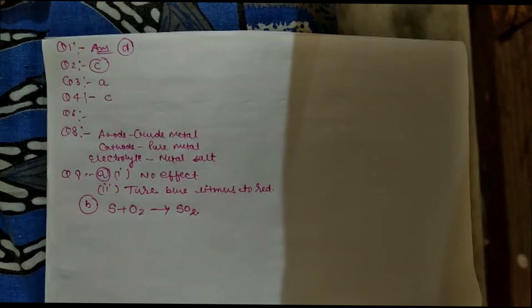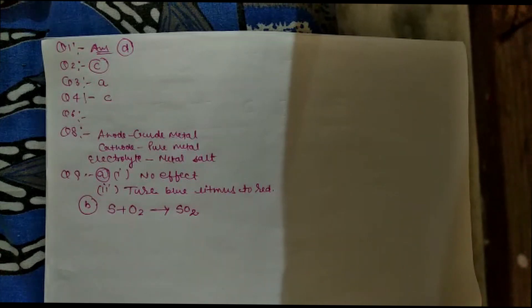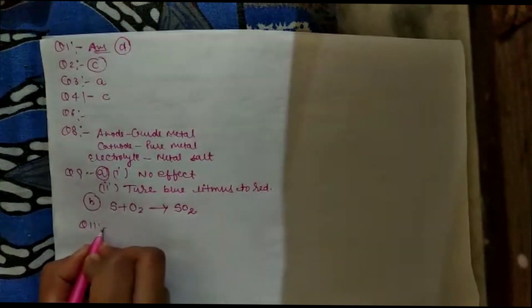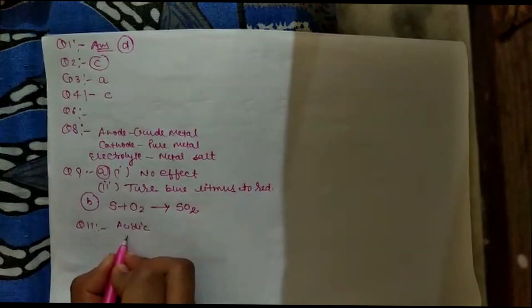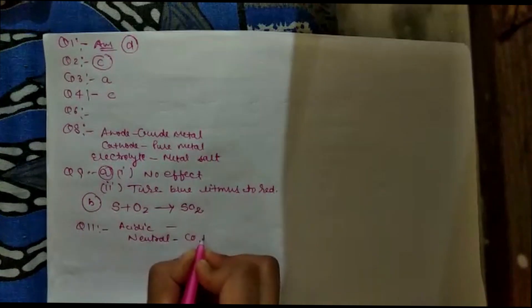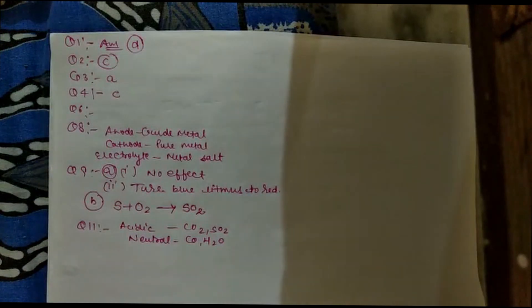Question 10: state two ways to prevent rusting of iron. You can use galvanization or alloying. Question 11: what type of oxides are formed when non-metals combine with oxygen? We discussed that we have two types of oxides: acidic and neutral. Examples are water H2O, carbon dioxide CO2, and sulfur dioxide SO2.